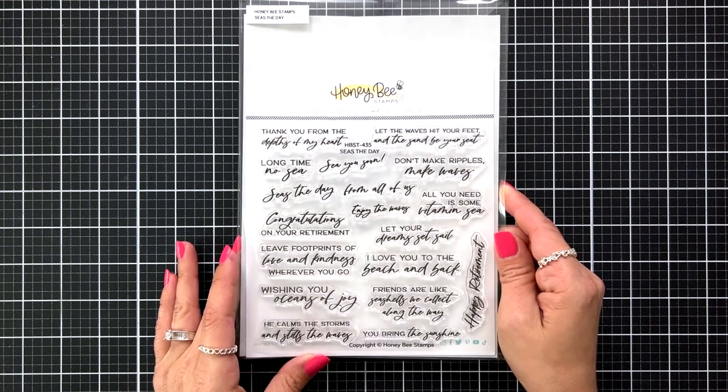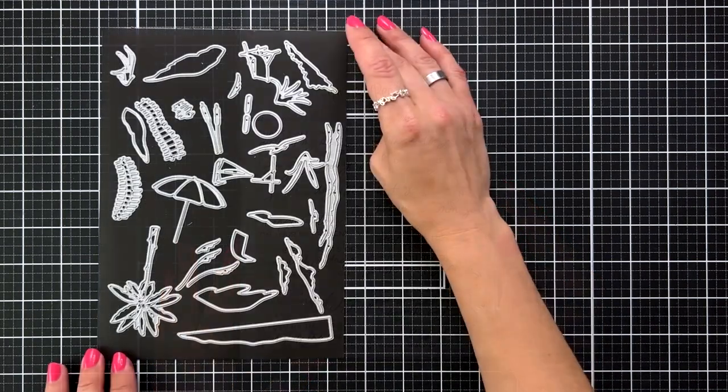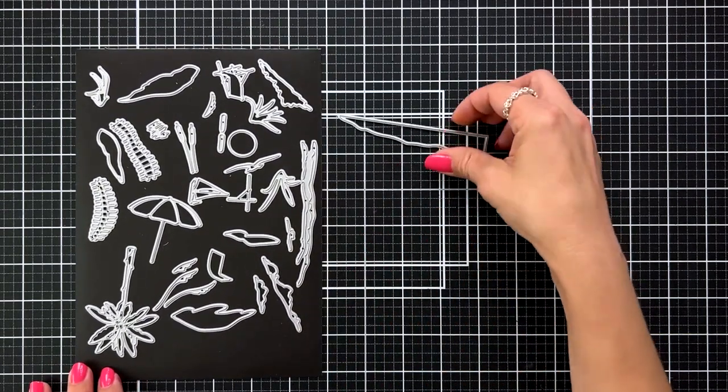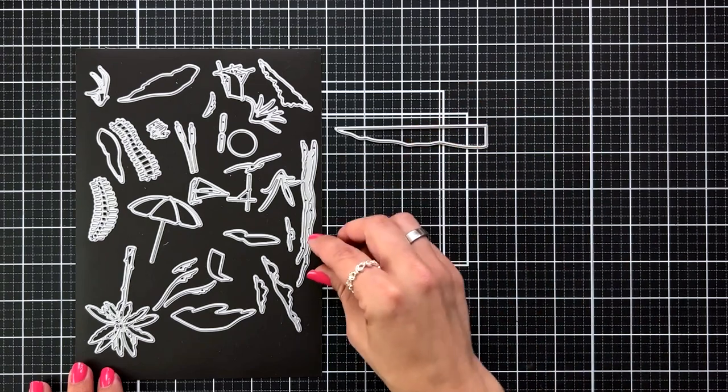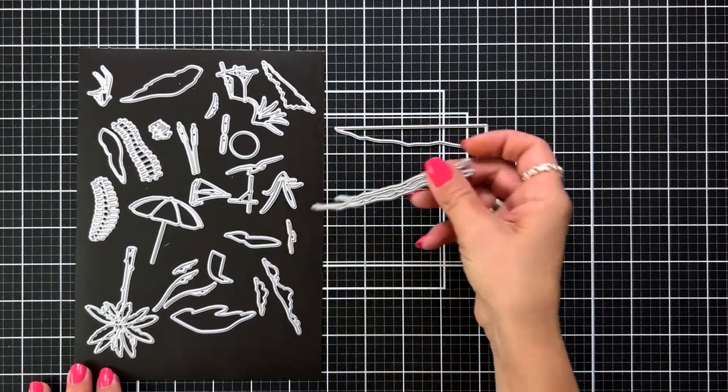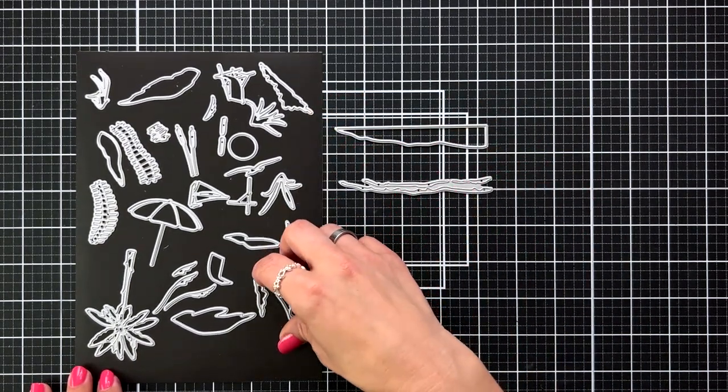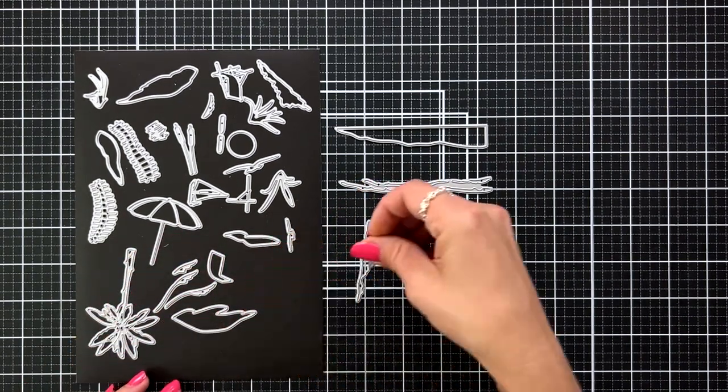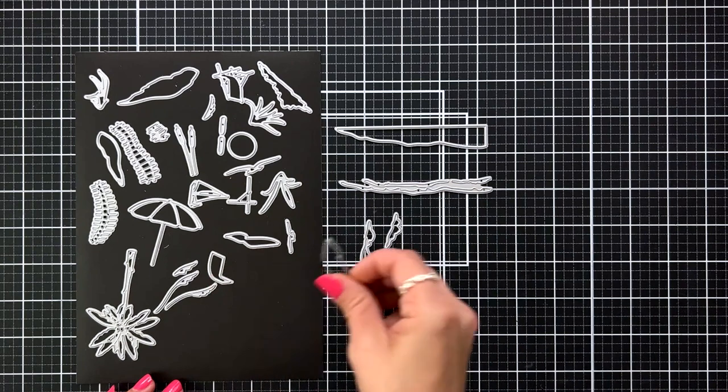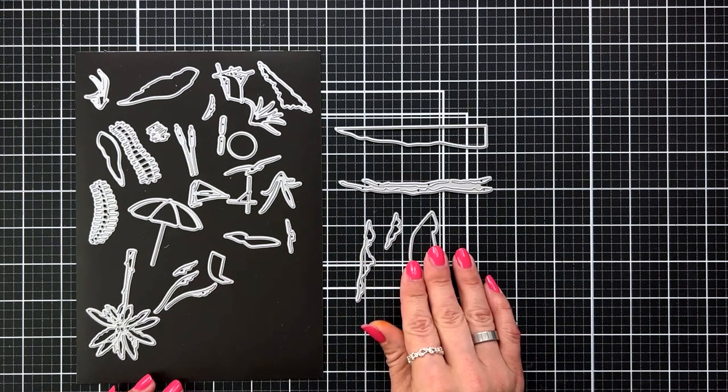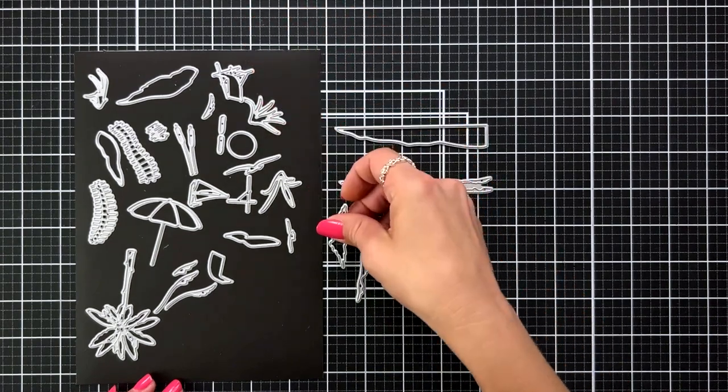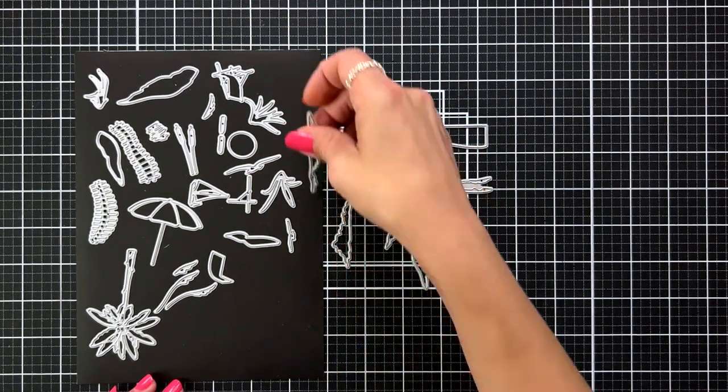I'm going to start my card by picking out all the dies that I want to use. Honey Bee Stamps has a graphic put together of what everything would look like laid out on a card, so I kind of went off of that. This first one is actually the water and then that second one is the foam that goes on the ocean water. There are some clouds here and then these rounded ones are going to be sand dunes. There's three of them and three clouds.